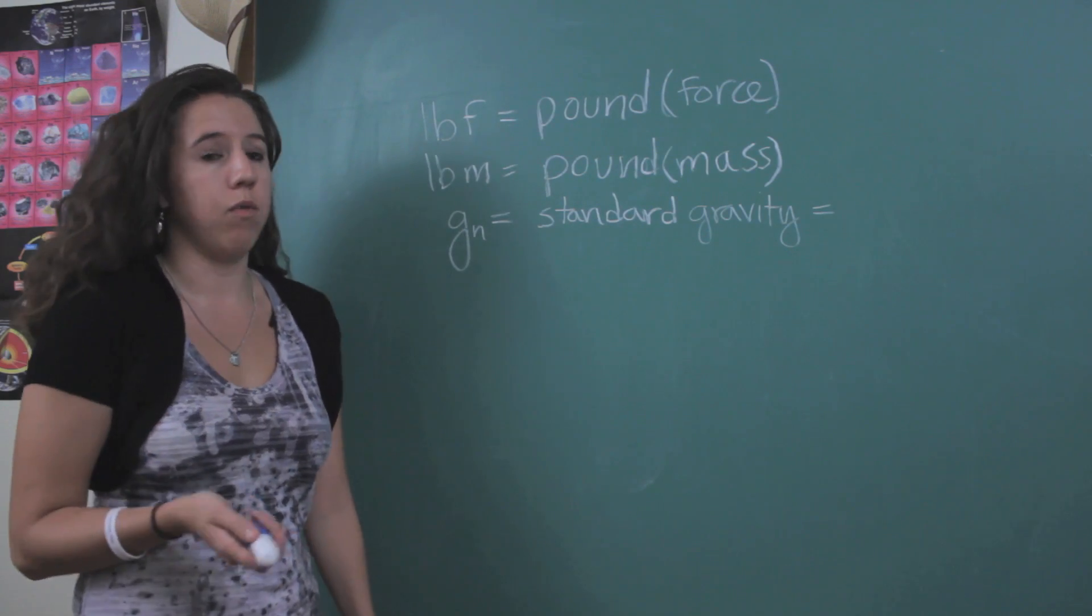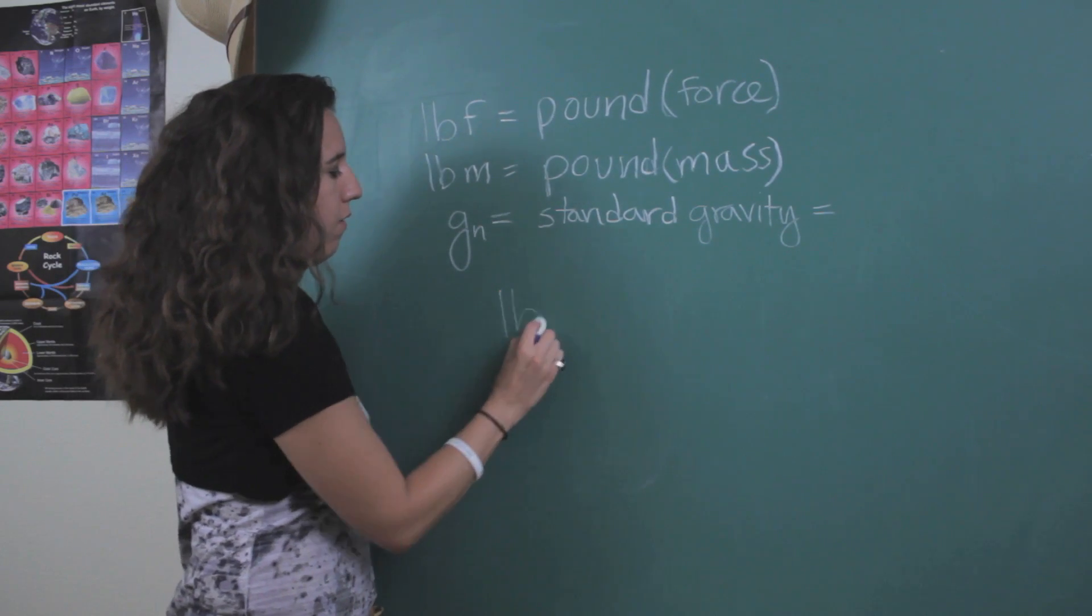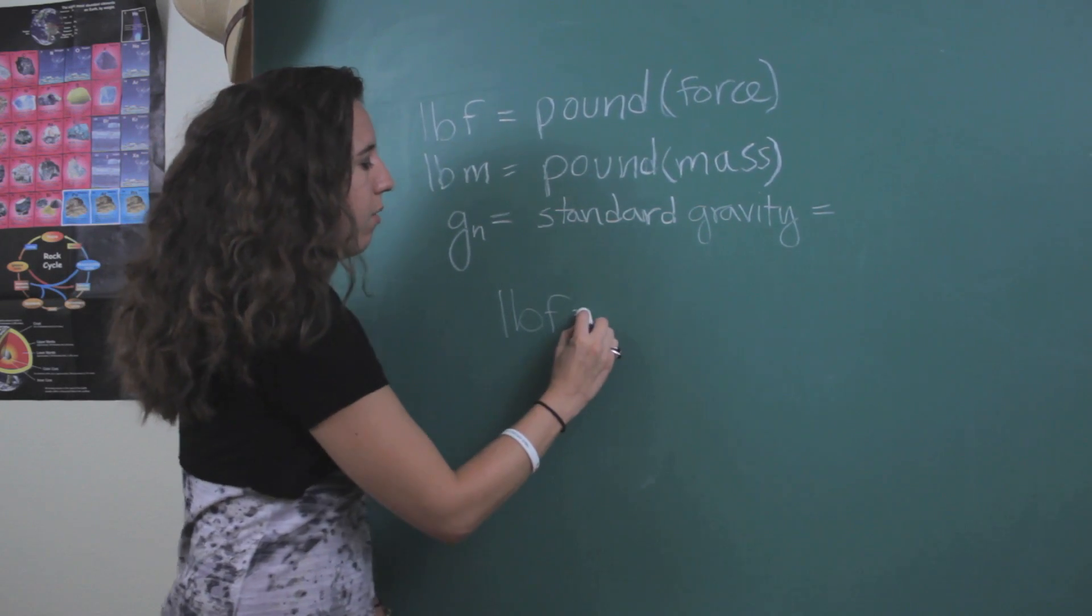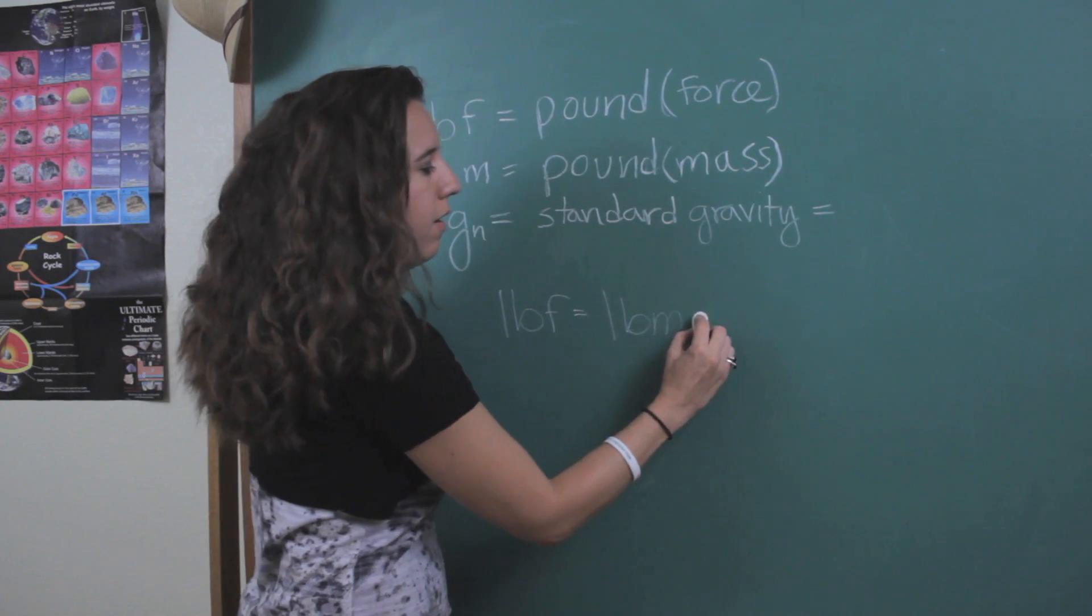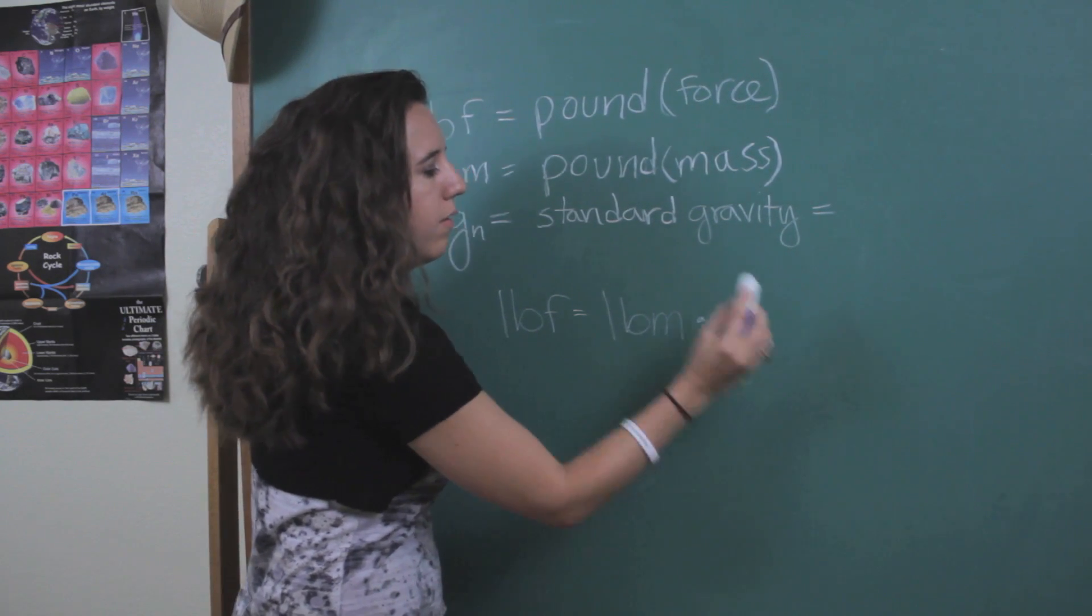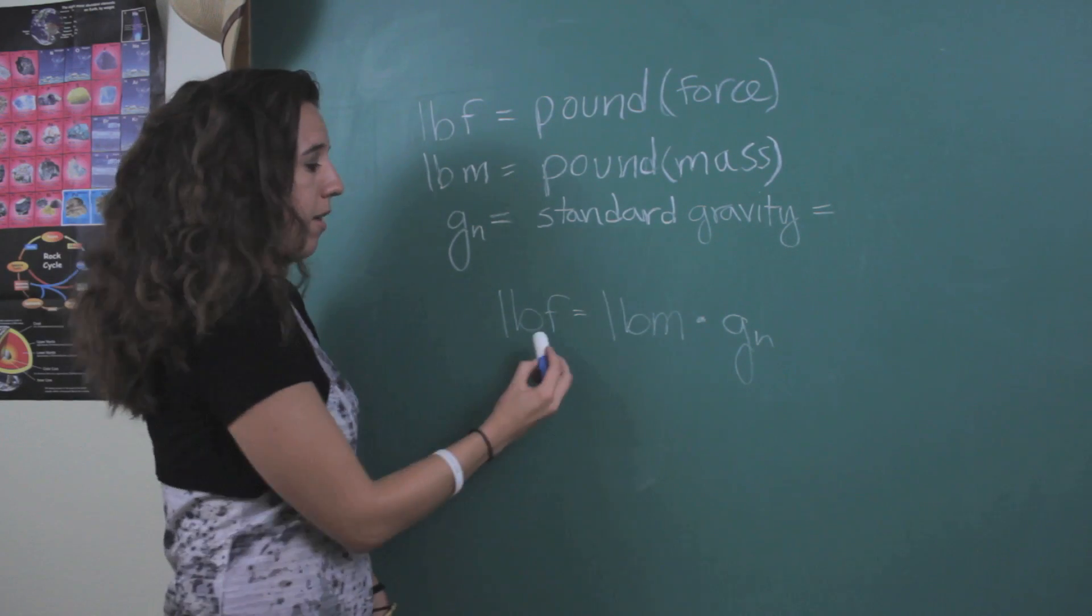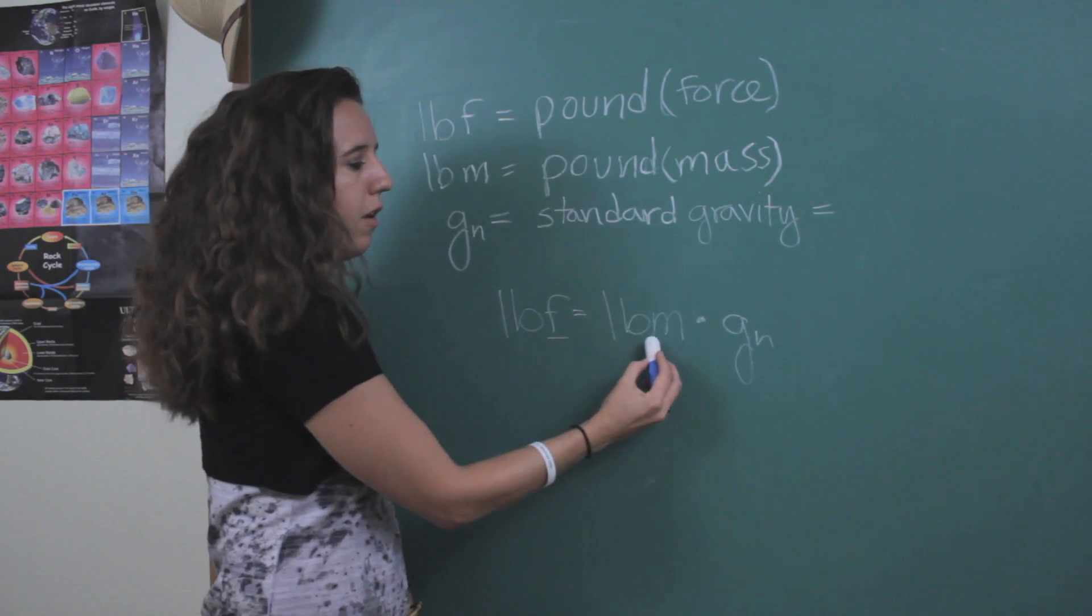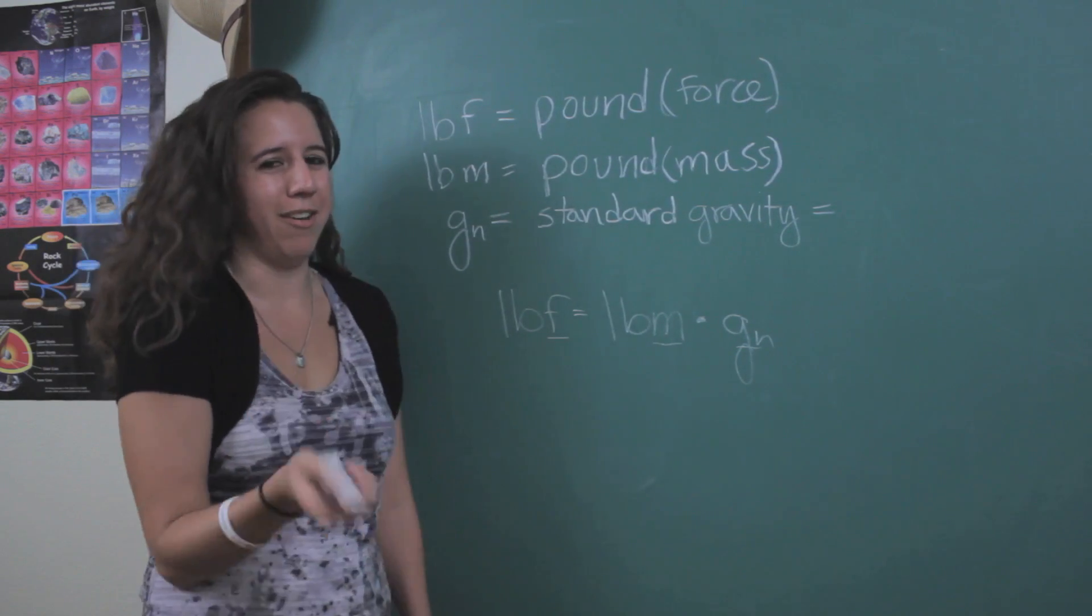So the standard form of this conversion goes like this. We have pound force equals pound mass times standard gravity. And for those of you that know Newton's second law, you might see it in there. Force equals mass times acceleration. But that's beyond our scope right now.